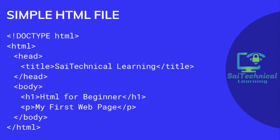The third one is the head tag. This element contains meta information about the HTML page. Next is the title element, which specifies a title for the HTML page. Next is the body element, which defines the document's body.